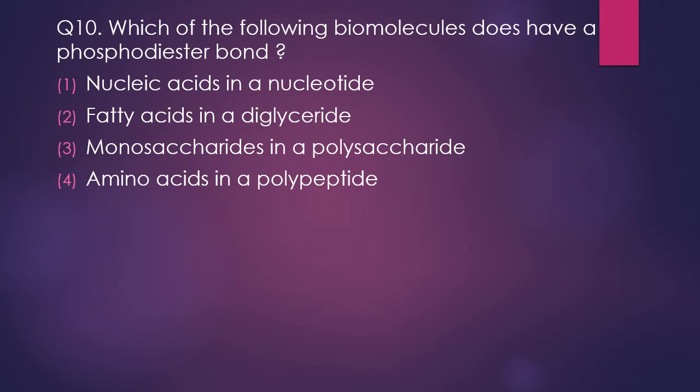Question 10. Which of the following biomolecules has a phosphodiester bond? Options: nucleic acid and nucleotide, fatty acid and diglycerides, monosaccharides and polysaccharides, or amino acids and polypeptides. A very simple question — the correct answer is option 1: nucleic acids and nucleotides.